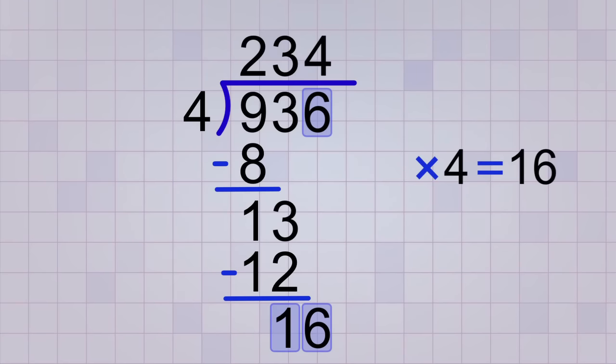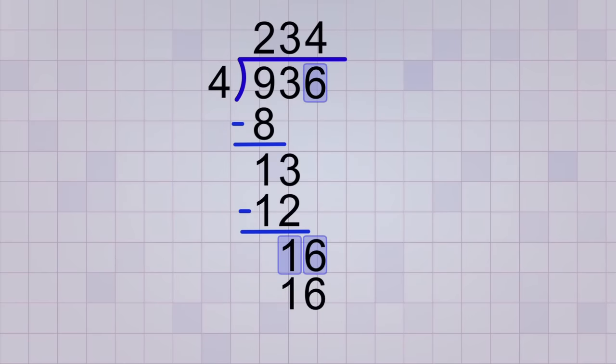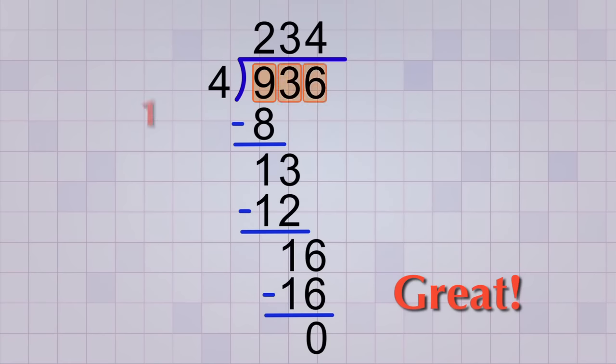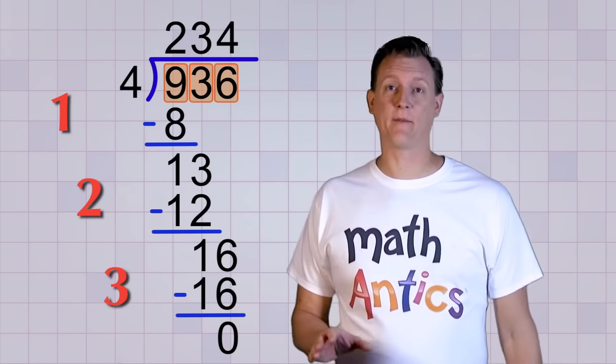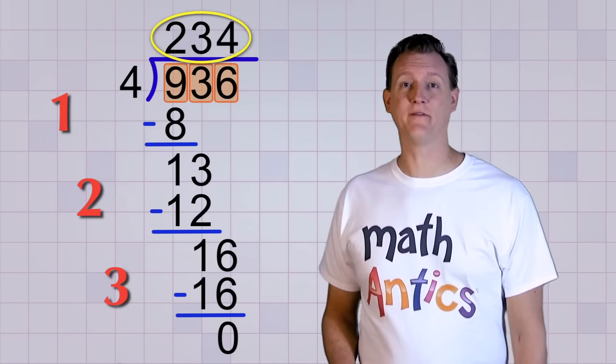So we put a 4 in the last place of our answer line, and then we write the 16 below our new remainder. Now, if we subtract 16 from 16, we see that our last remainder will be 0, which means there's no remainder left. That's great! We solved the whole division problem, digit by digit, by breaking it up into 3 basic division steps. And now we know that 936 divided by 4 equals 234.